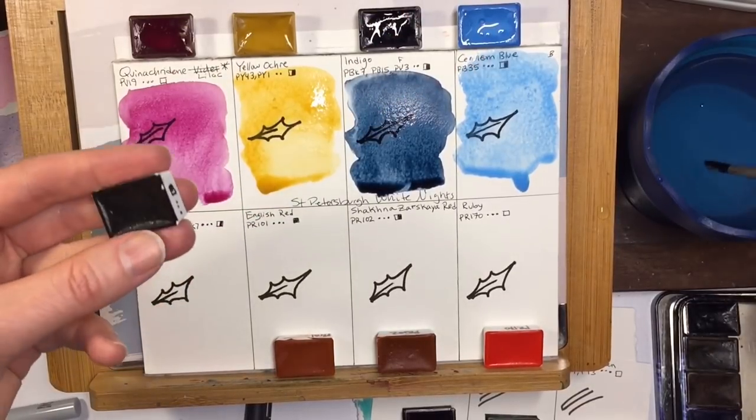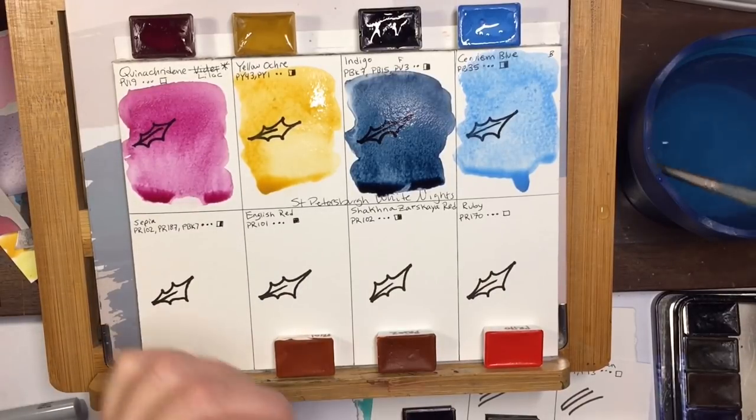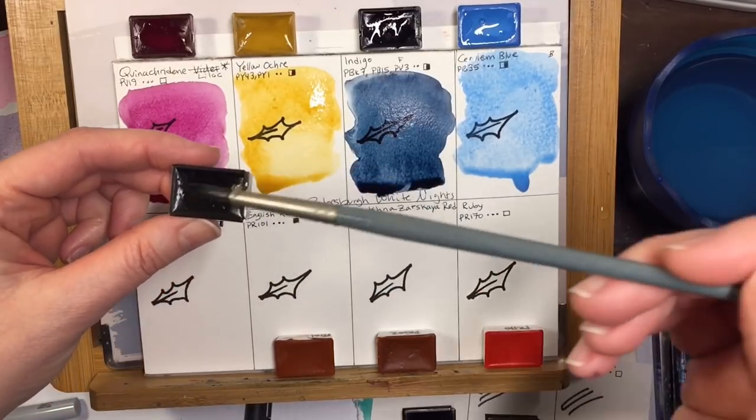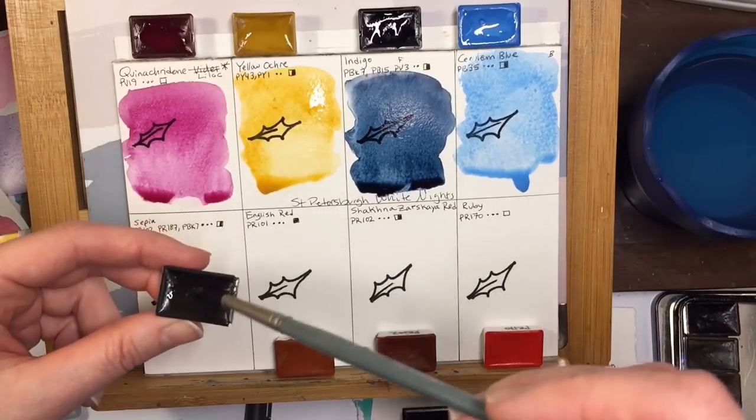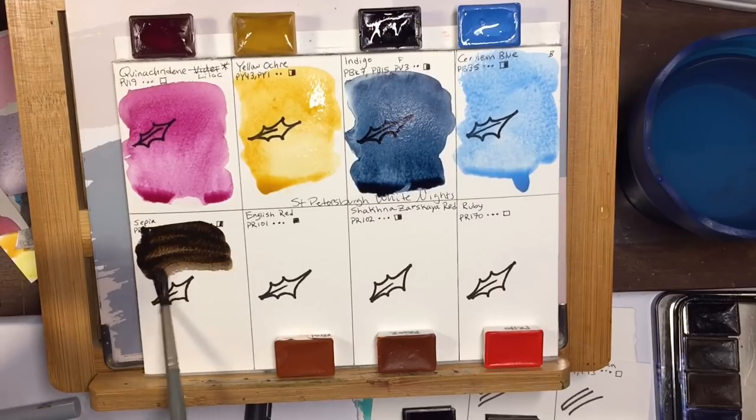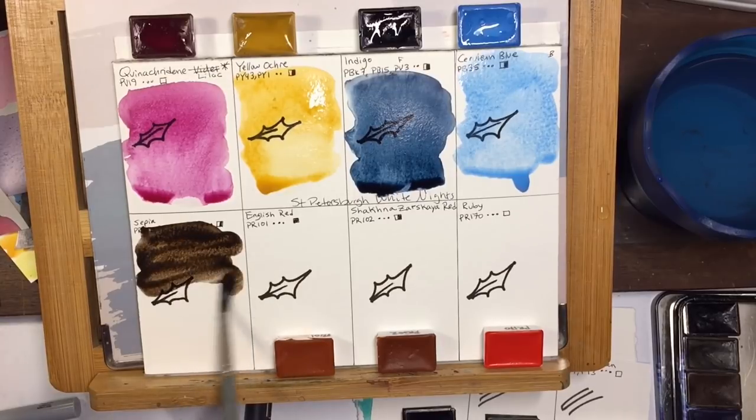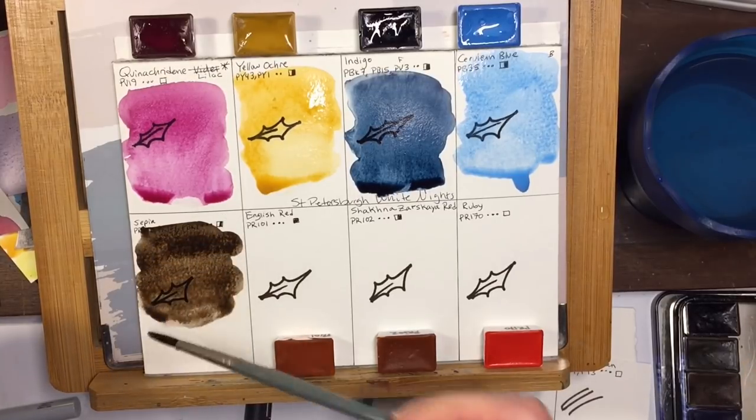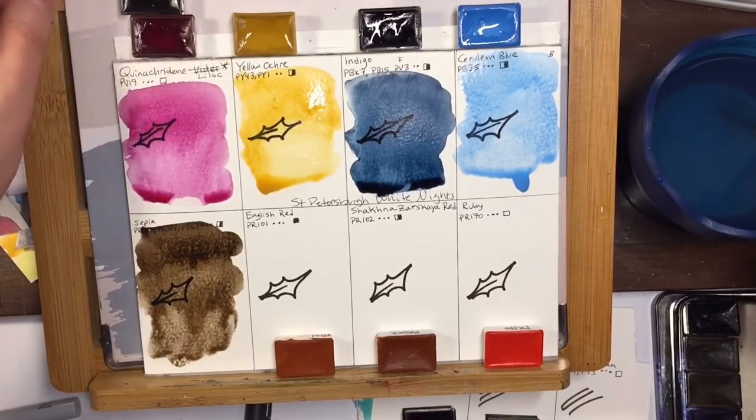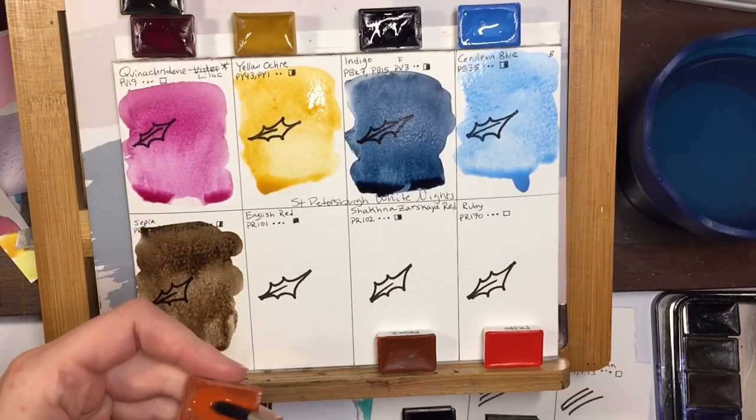And this is the sepia I was curious about. It's got two reds of PR102 which is one of these, this one right here. A PR187 which I don't even know what that is. I can't find it in my list. And a PBK7 which is a black. So right away I can tell that there's some of this color in there. It's a very nice sepia, very lightfast. Nice and burnt and dark colored but not so much that it's almost black.